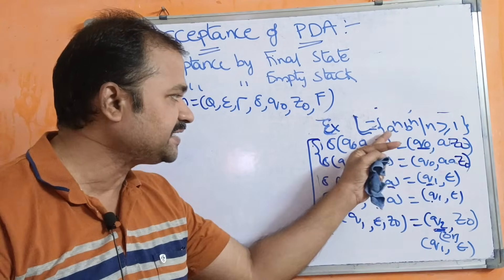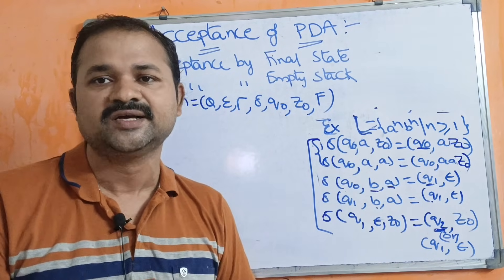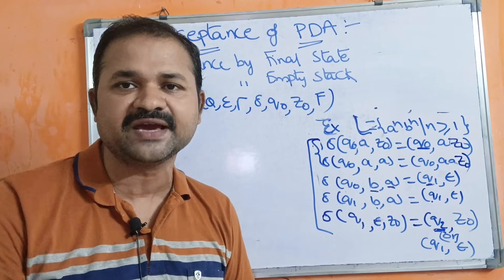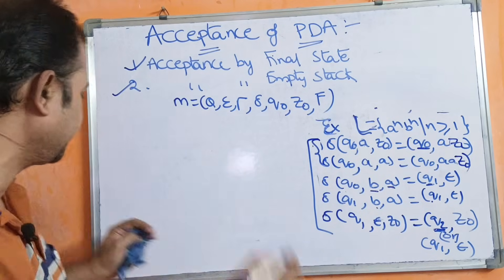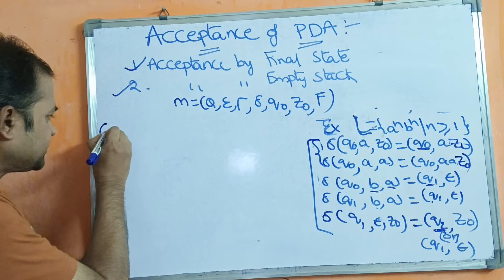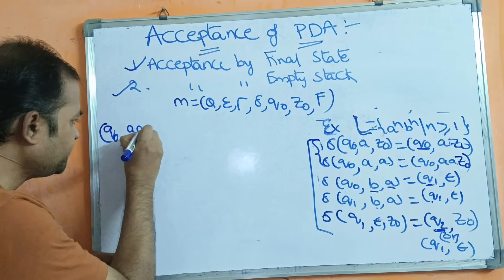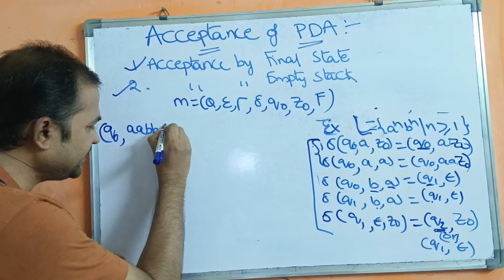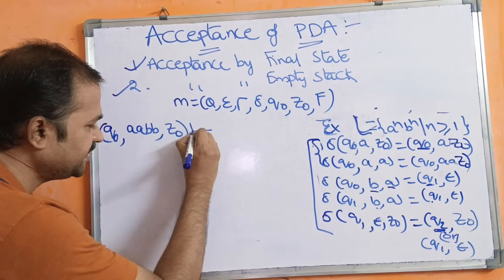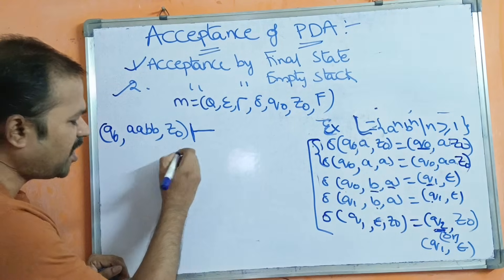Now let us trace with the help of a string. The language has equal number of a's followed by equal number of b's. Possible strings: if n=1, ab; if n=2, aabb; if n=3, aaabbb, and so on. We will use instantaneous description (ID) to trace. The ID is a triple: current state, remaining input string, and stack content. Initially, the state is q₀, the input string is aabb, and the stack content is Z₀.